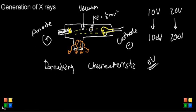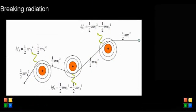One electron volt is equivalent to the amount of energy gained by a single electron accelerated through a voltage difference of one volt — that's a basic physical concept. So this is how x-rays are generated. Now let's go into the details. Electrons accelerate from the cathode toward the anode material.